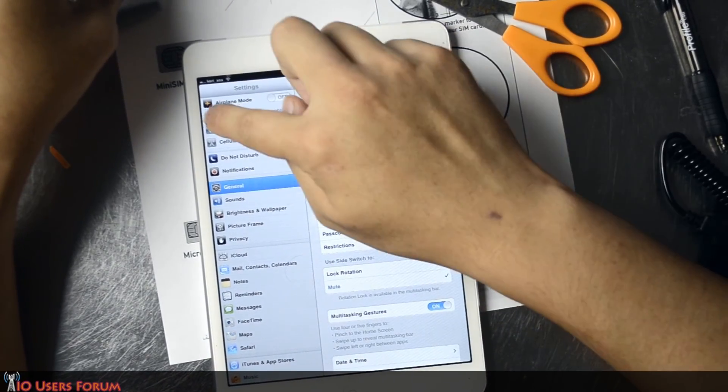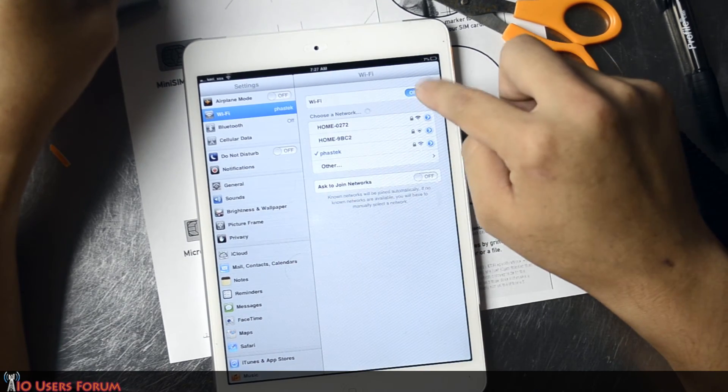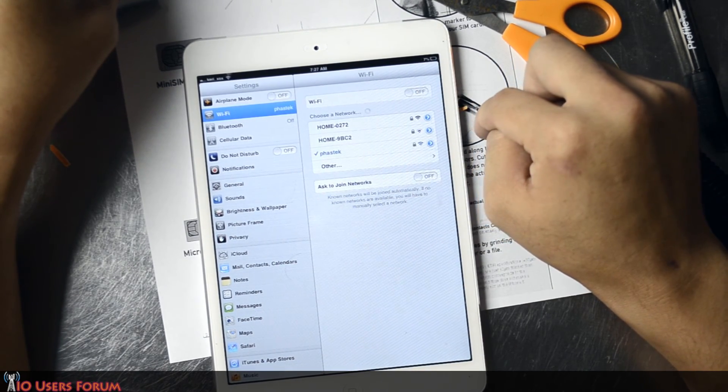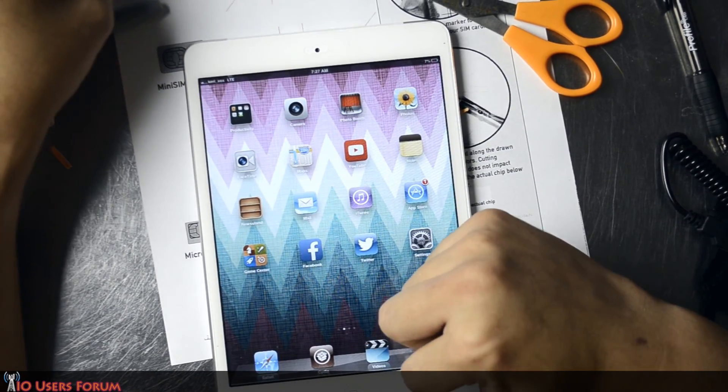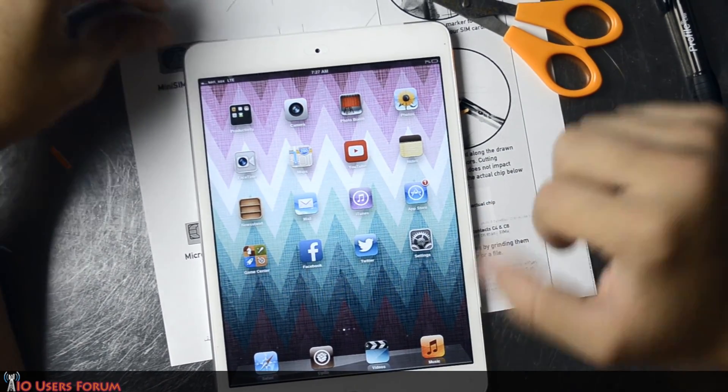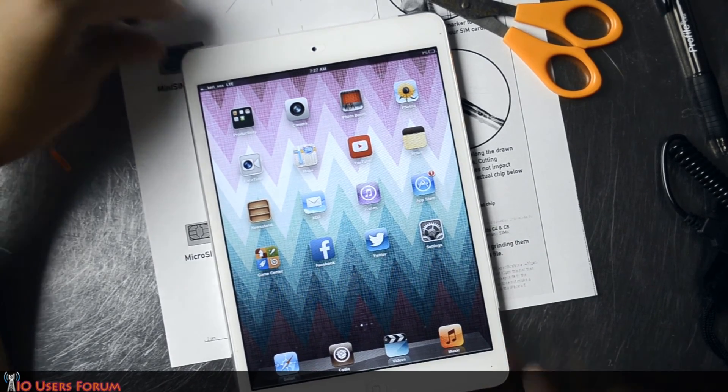Let's take it off of Wi-Fi. And there you go, we have LTE. So I've successfully cut a microSIM down to a nanoSIM.